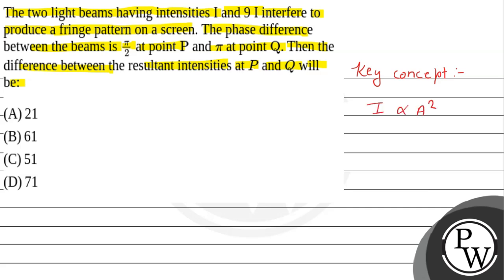Here we have two light beams which produce fringe patterns on a screen. The resultant intensity is I = I₁ + I₂ + 2√(I₁I₂) cos φ. Here I₁ is intensity 1, that is I, which is given in the question.